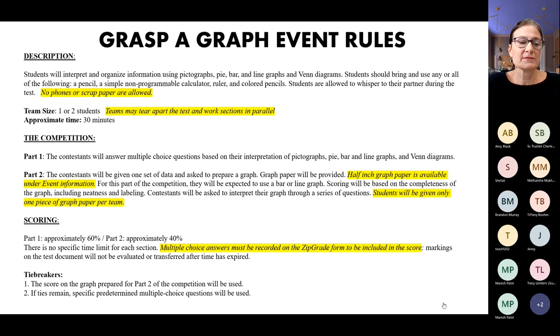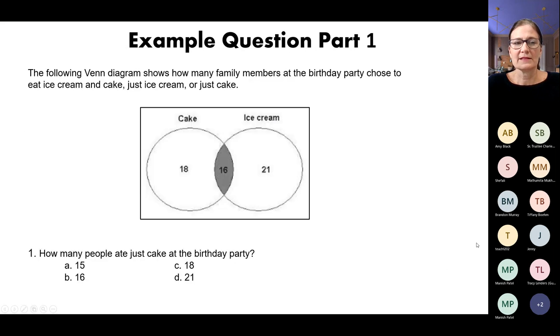We've got tie breakers in case the total score - if there's any ties, then I'll look at part two, who scored better on part two first. And if there's additional ties, then we'll have some predetermined multiple choice questions that we will use as tie breakers.